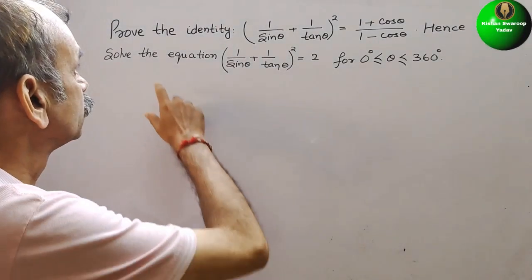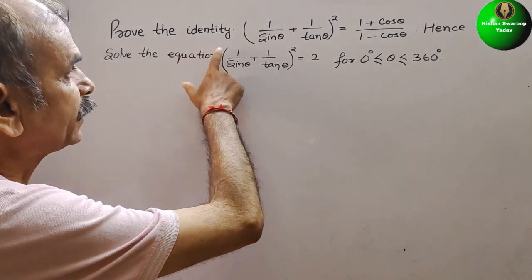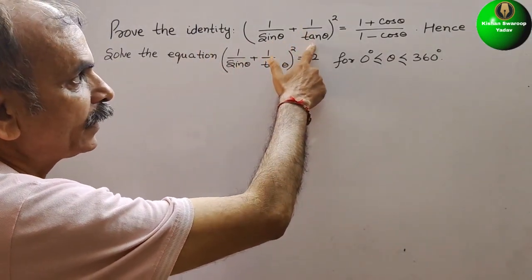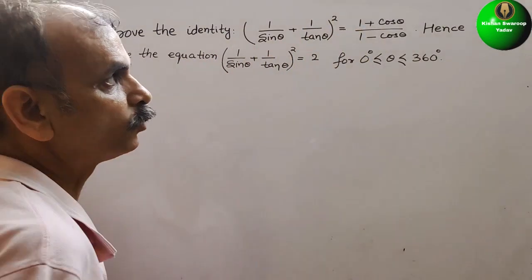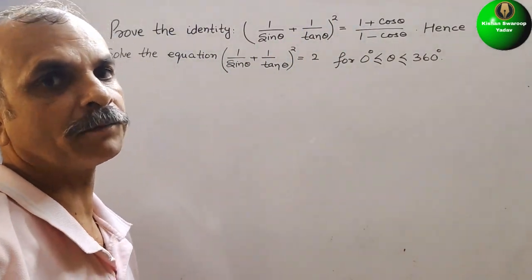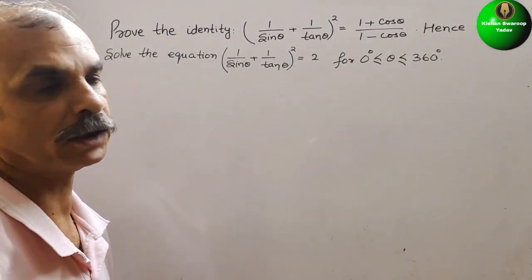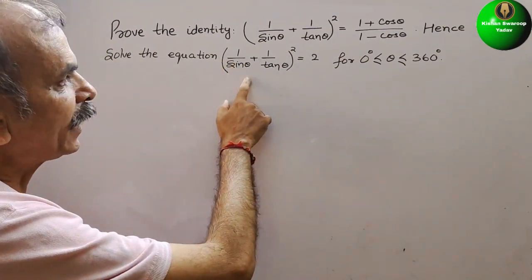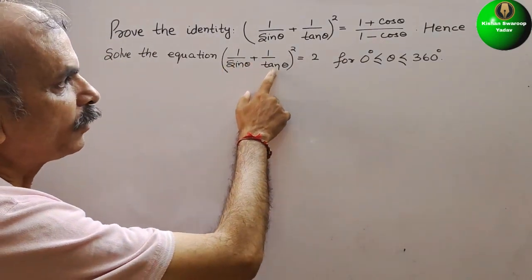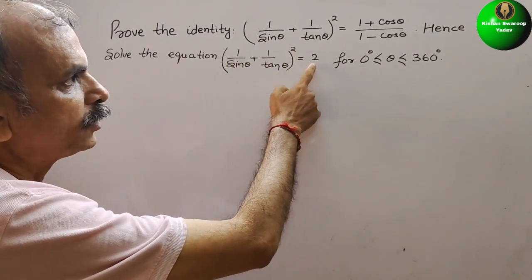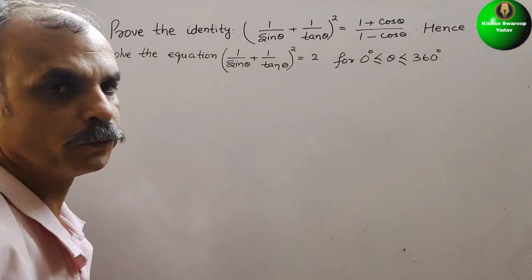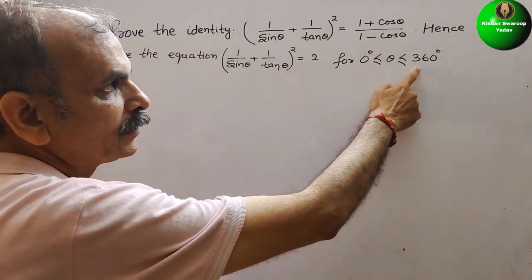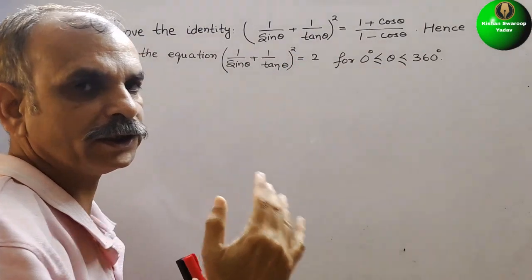Your question is: prove the identity (1/sin θ + 1/tan θ)² = (1 + cos θ)/(1 − cos θ). Hence, solve the equation (1/sin θ + 1/tan θ)² = 2 for 0° ≤ θ ≤ 360°.